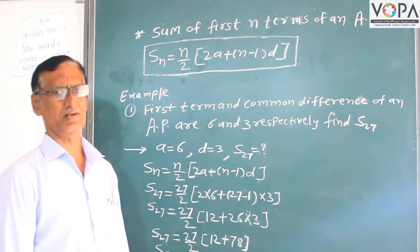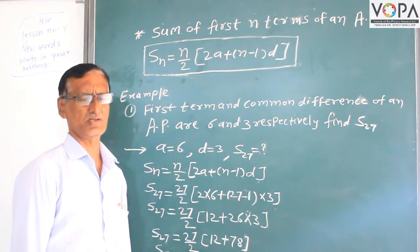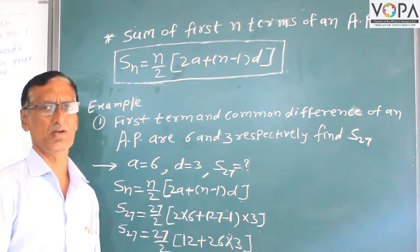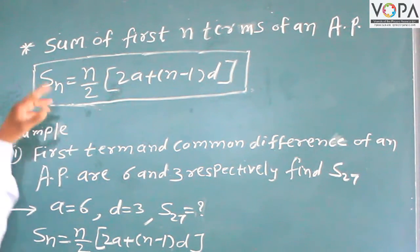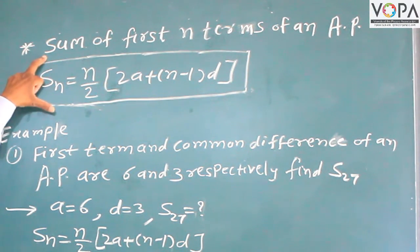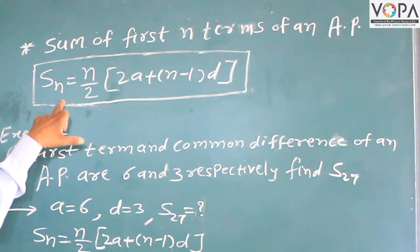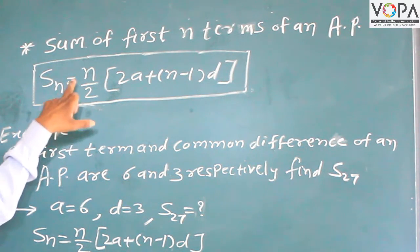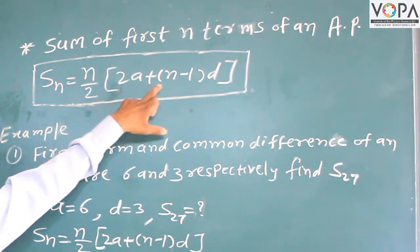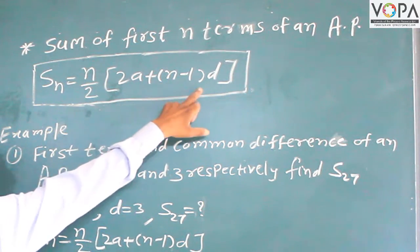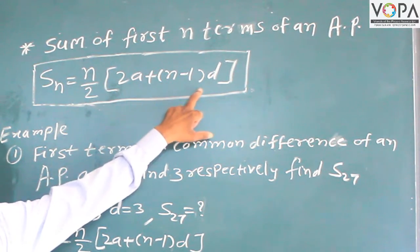This is the sequence — another example of the nth term, another example of the sum of the first n terms. That is the formula: Sn is equal to n upon 2, multiplied by 2a plus n minus 1 into d.